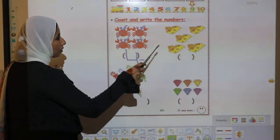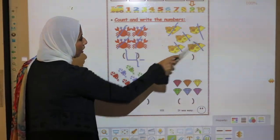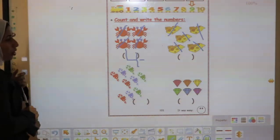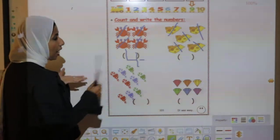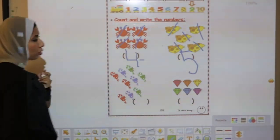Try to count again. 1, 2, 3, 4, 5. So, the right number is 5. How can I write it? Sleeping dash, stick down, semicircle.